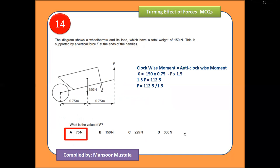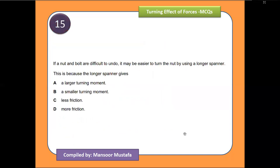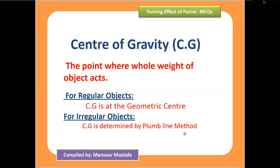This is a conceptual question: if a nut and bolt are difficult to undo, it may be easier using a longer spanner. This is because a longer spanner increases the distance from the pivot, which increases the moment, thereby producing a larger turning effect. The correct option states it produces a larger turning moment.